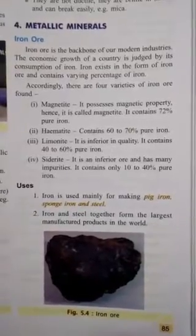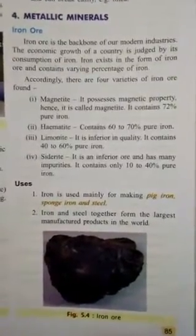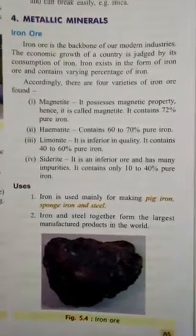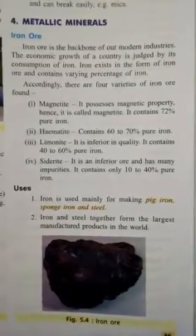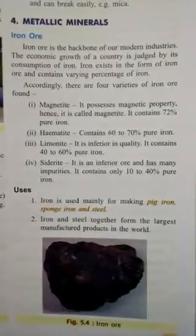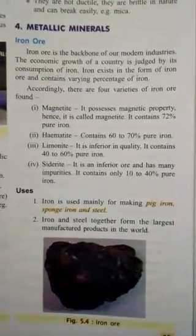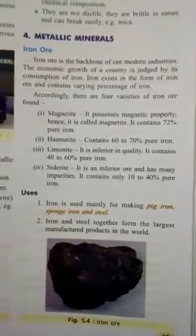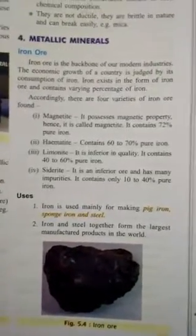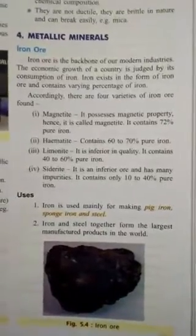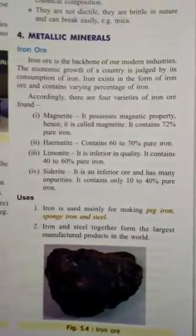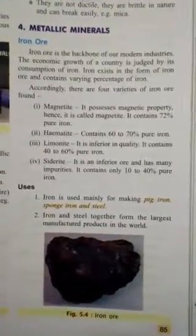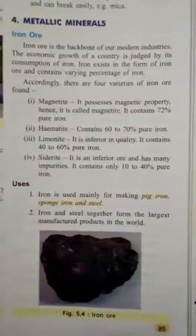Magnetite contains 72% pure iron. Dear students, you should learn that the purest form of iron ore is magnetite, which has 72% pure iron.